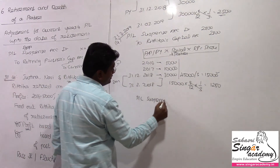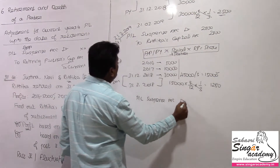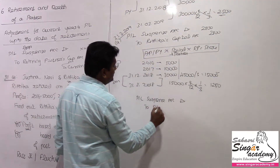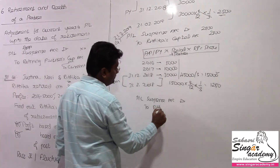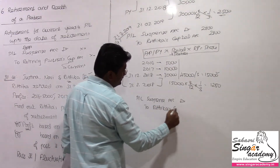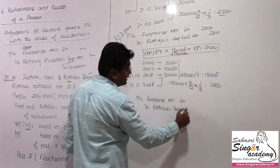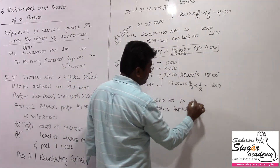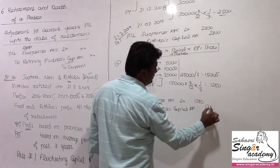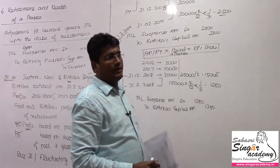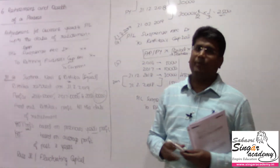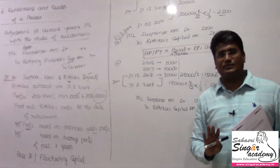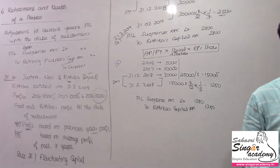So Hrithika is getting 1,250. The journal entry will be the same: P&L Suspense account debit to Hrithika's Capital account (if fixed capital, then Current account) — 1,250 — being profit up to the date of retirement. The profit meant for the retiring partner is credited to their account and debited to the P&L Suspense account. That is how you pass the narration.